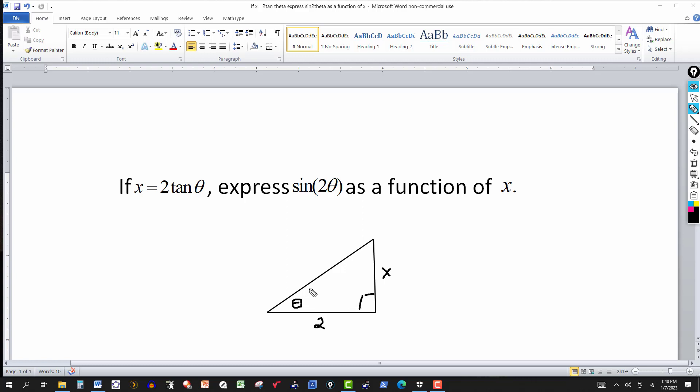So you can see if I take the tangent of theta, it would be opposite over the adjacent. So I get tangent of theta is equal to x over 2. If I multiply both sides by 2, of course I get 2 tangent of theta is equal to x.